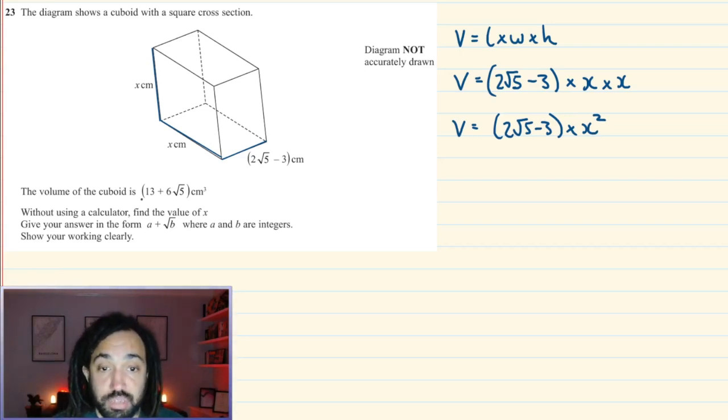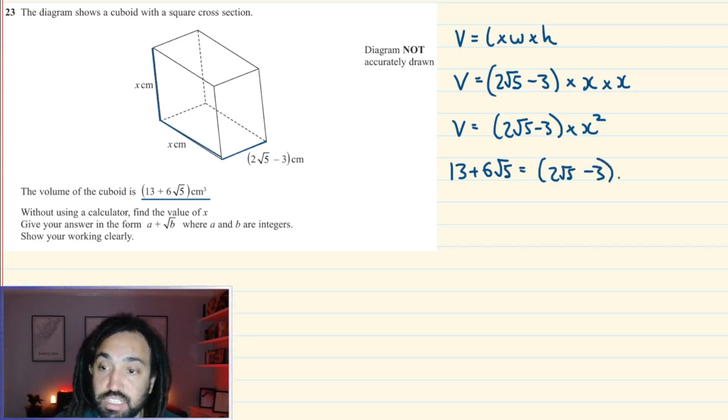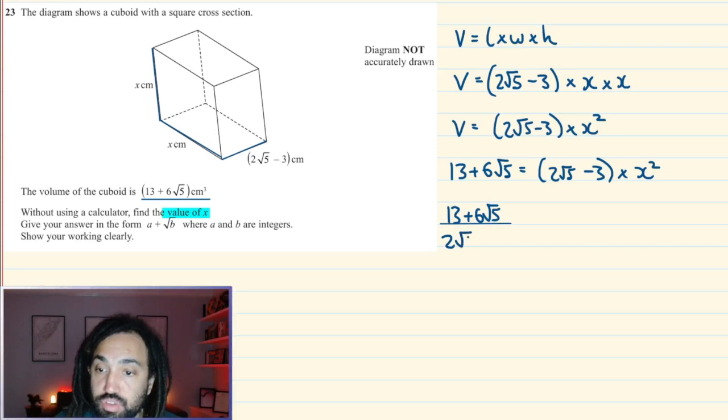So the volume is equal to (2√5 - 3) multiplied by x². And we know what the volume is. We're given the volume. So I can say 13 + 6√5 is equal to (2√5 - 3) times x². The question says we want to work out the value of x. So I'm going to divide through to get (13 + 6√5) over (2√5 - 3), and that's equal to x².